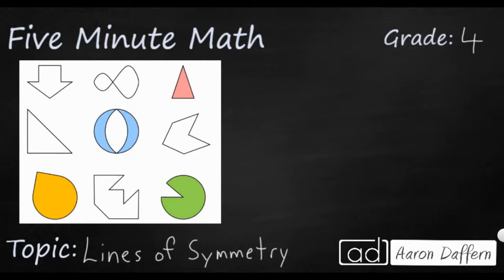So a line of symmetry is an imaginary line, so typically you're not going to see it. If you do see it, it's going to be in a dash. And it's a line that you can draw through a shape, and as you can see here we have nine shapes that are not your normal shapes, that will fold that shape in half exactly.